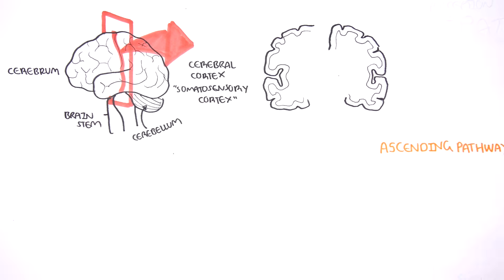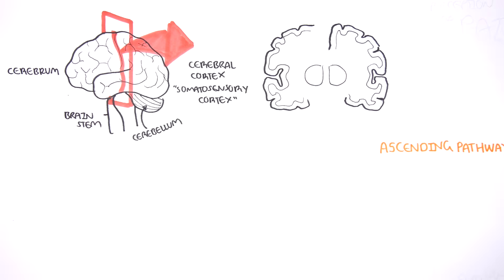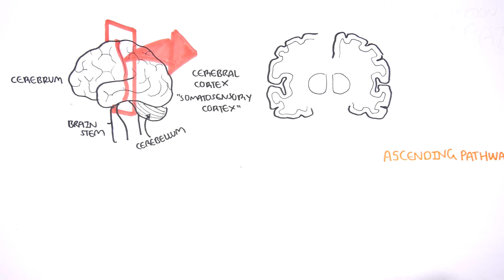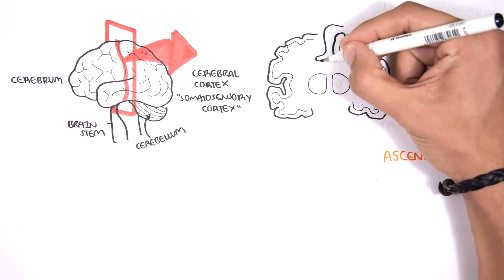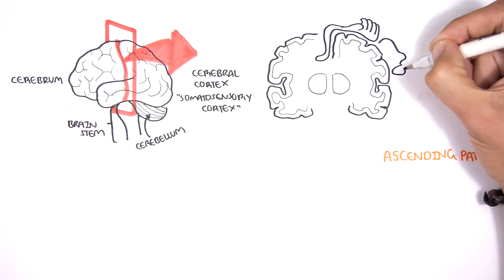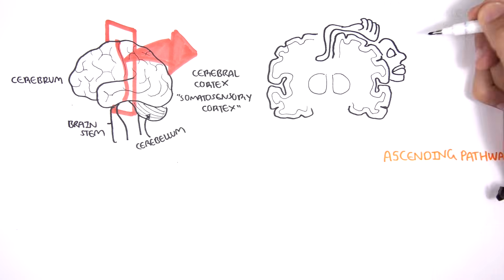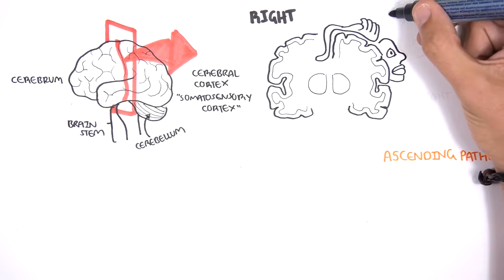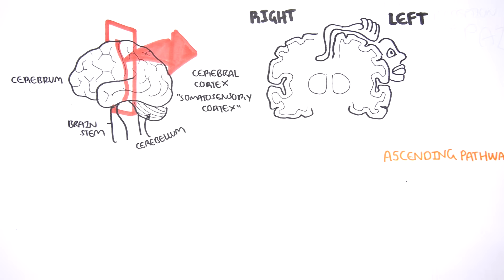The somatosensory cortex has areas which correlate to different parts of our body. For example, looking at the left side of the somatosensory cortex, the outer region here represents the leg, hand, and face. This is your right side, and this is your left side of the brain.